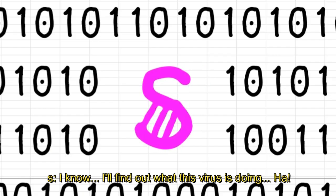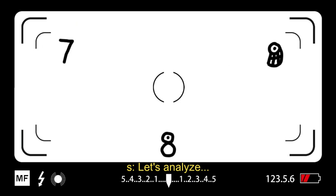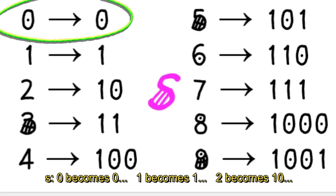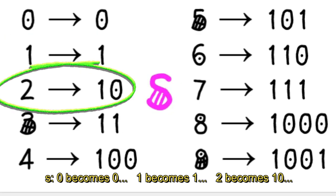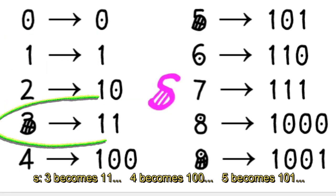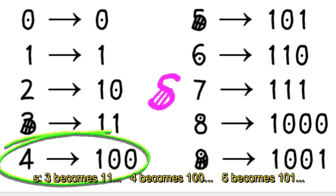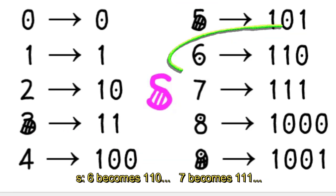Ok, I'll find out what this virus is doing. Let's analyze. 0 becomes 0, 1 becomes 1, 2 becomes 10, 3 becomes 11, 4 becomes 100, 5 becomes 101, 6 becomes 110.